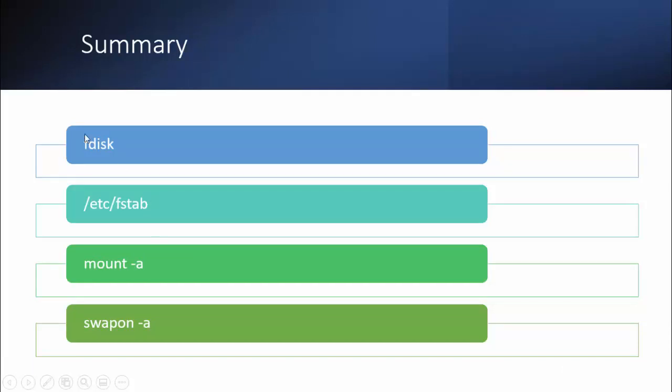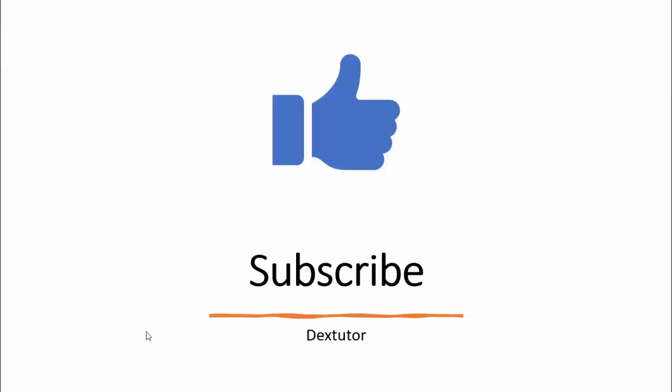Summary: use fdisk for partitioning, update /etc/fstab. For a simple partition use 'mount -a'; for swap use 'swapon -a'. Expect at least one direct question on this, and the partitioning concept can appear in two to three questions indirectly. Practice this at least once daily for the next five days. If you like the content, subscribe and see you in the next video on LVM.